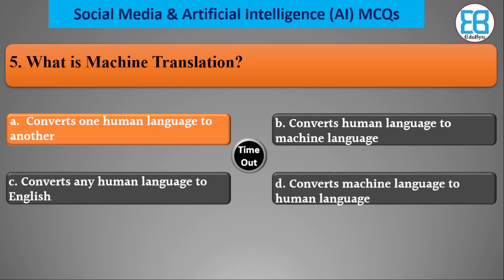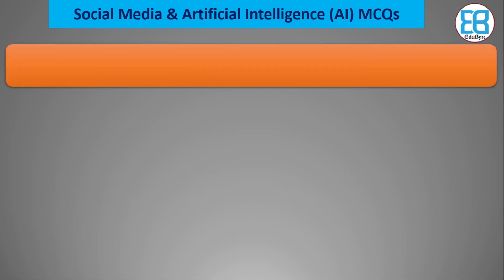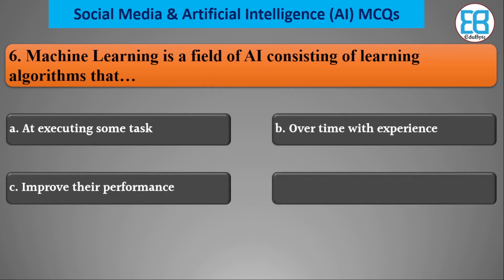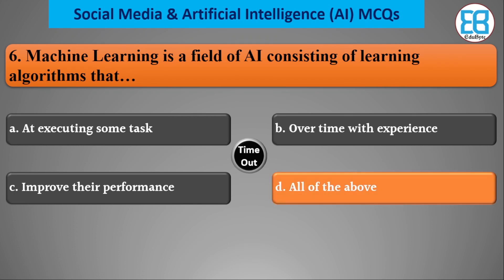Machine learning is a field of AI consisting of learning algorithms. The correct option is all of the above — algorithms that improve their performance over time through experience.